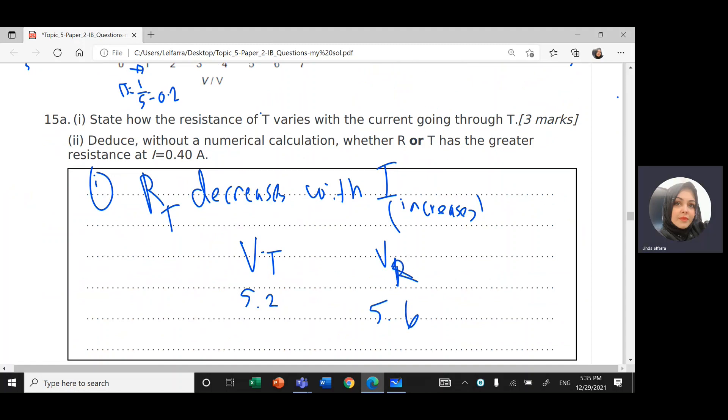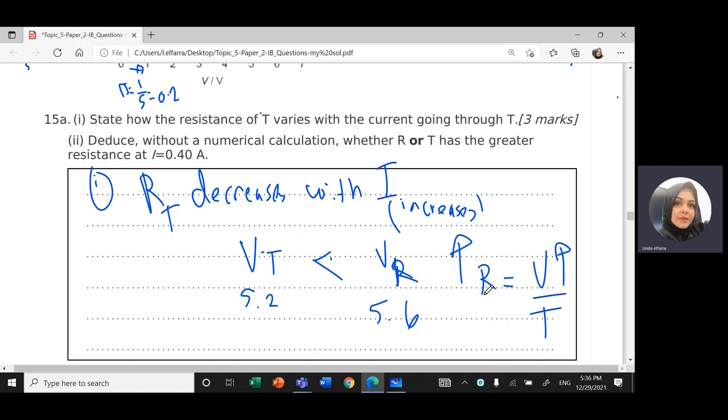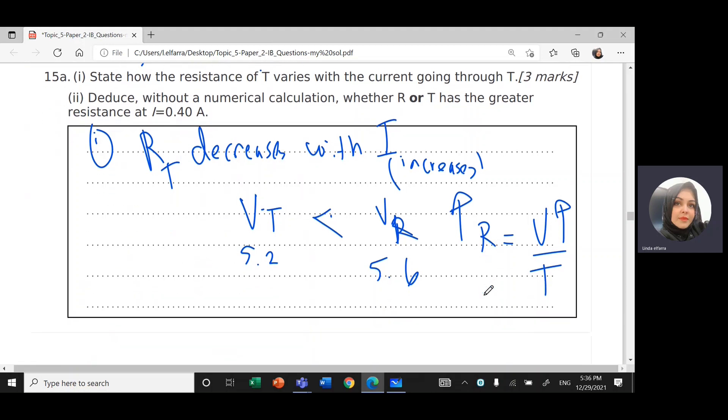So V of R is greater than V of T, or V of T is less than V of R. And we know from the equation Ohm's law R equals V divided by I. If I increase the voltage, the resistance will decrease and vice versa. If I decrease the voltage, the resistance will decrease. That means the resistance for T, the resistance of T should be less than the resistance of R.